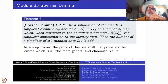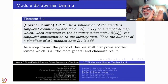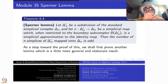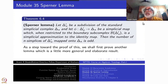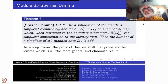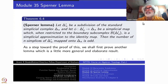Welcome to Sperner's Lemma. Today we are going to do a purely combinatorial result — one single result. It is a result in topology but a combinatorial result. It has a very distinctive role: it is a landmark result which opened the floodgates for many other combinatorial results inside topology and vice versa. It is very simple to state, stated for the simplicial complex, namely the standard n-simplex — simplest object as such.